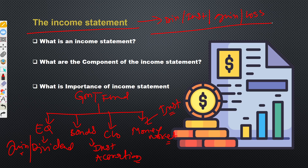The balance sheet represents the present situation of capital, assets, and liabilities. It also helps you understand cash availability, total assets, total liabilities, and capital position. Capital plus liabilities equals assets. For example, capital of 1,000 minus total liabilities of 200 gives a net balance of 800, which ties with your assets.